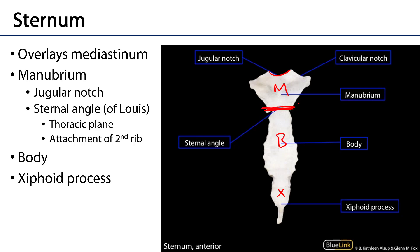So if we were to imagine moving posteriorly from this sternal angle back to the intervertebral disc of T4-T5, that will be the thoracic plane. It's also here at this sternal angle that the second ribs are going to attach via their costal cartilages.